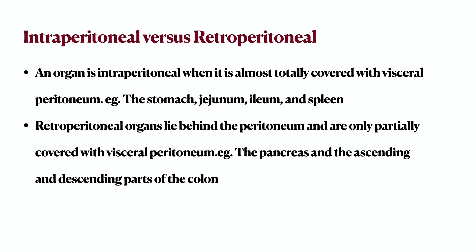Retroperitoneal organs lie behind the peritoneum and are only partially covered with visceral peritoneum. Examples include the pancreas, the ascending and descending colon, the kidneys, and the adrenals.